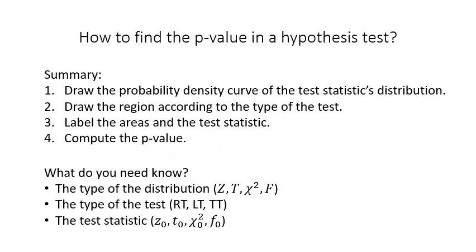In summary, to find the p-value in a hypothesis test, we first draw the probability density curve of the test statistic's distribution, then draw the p-value region according to the type of test, label the areas, and place the test statistic on the horizontal axis. Then we compute the p-value. To do this, we must know the type of distribution, the type of test, and the test statistic.